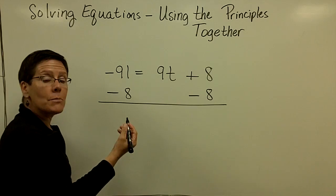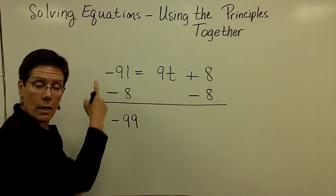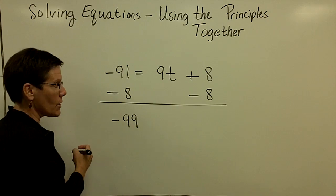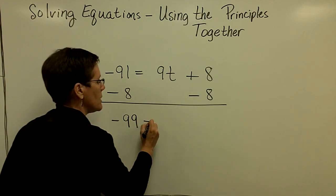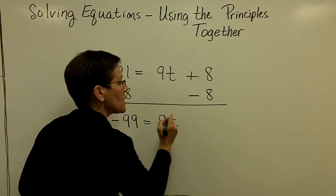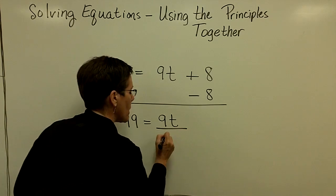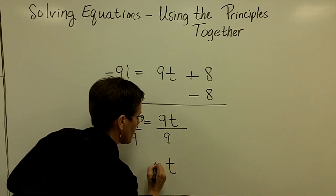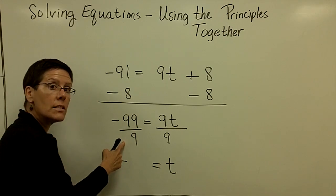And when you add them together, you add their absolute values and get 99, and you give that value the common sign that they share. So a negative 91 plus a negative 8 is a negative 99. And now, I'm going to turn to the multiplication principle, or I'm going to say that I'm going to divide both sides by 9, and I'm going to find out that t is equal to a negative number. Negative divided by a positive is a negative.